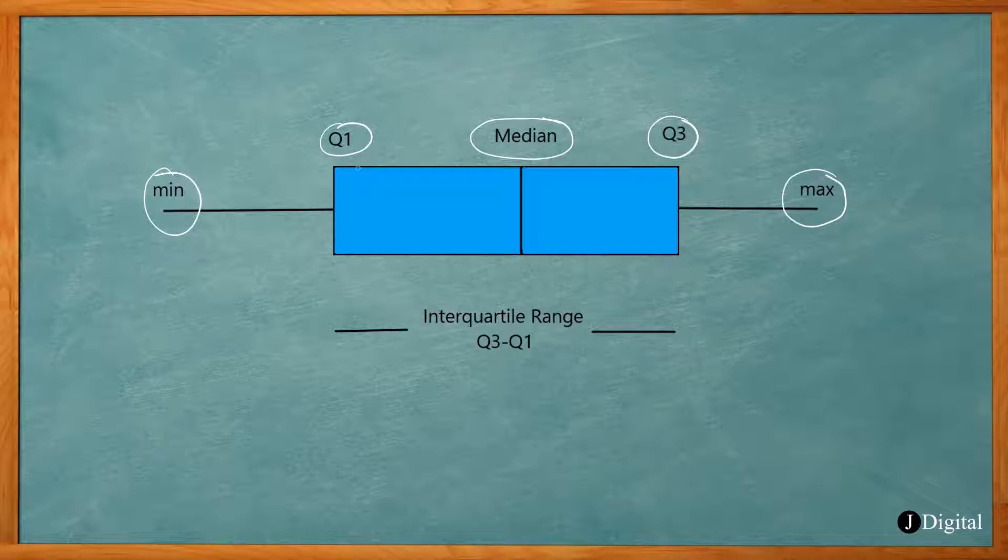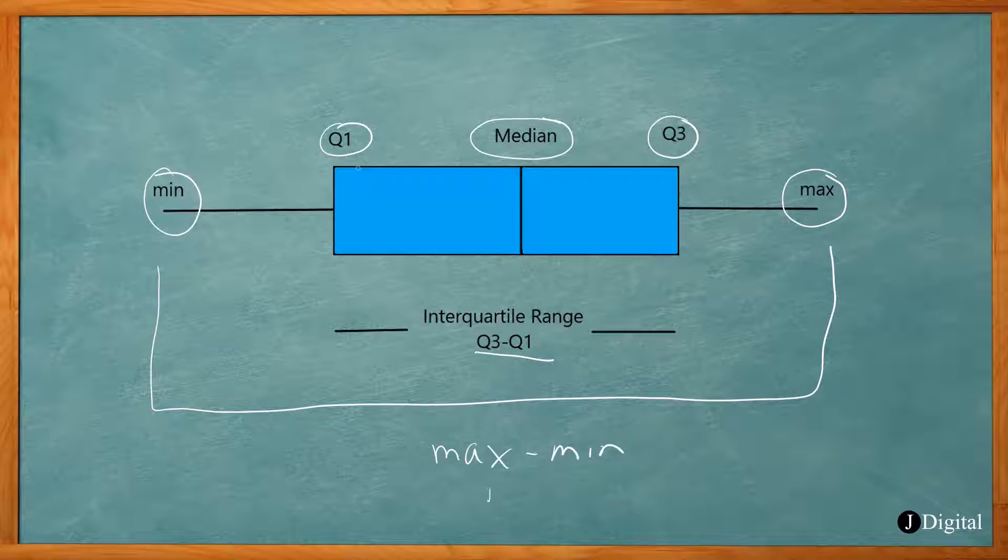And the interquartile range is Q3 minus Q1. And the range of the whole data set is from the minimum value to the max value. So the max minus the min. That is the range.